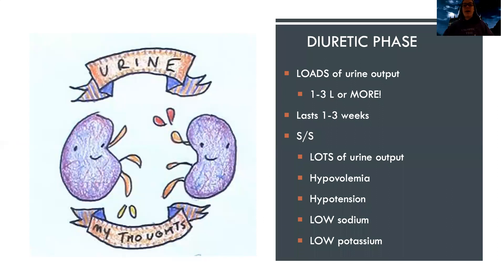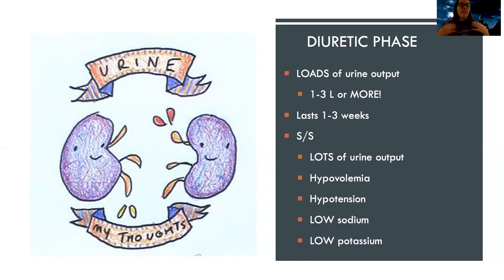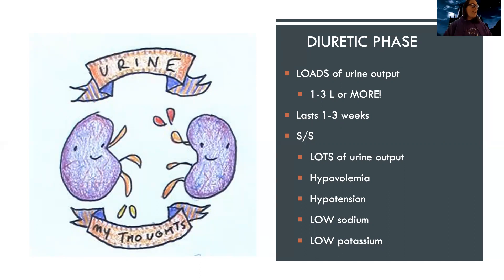On the opposite end of the spectrum, in the diuretic phase, the patient is doing a little better - they regain the ability to urinate. The problem is they can urinate but cannot concentrate their urine. The kidneys go a little crazy, letting go of everything in a free-for-all - lots and lots of diuresis. They can produce one to three liters or more of urine, and this phase usually lasts one to three weeks. With all that urine output comes loss of volume, so you can see low blood pressure and low preload. They can also have low sodium and low potassium because they're peeing everything out. Watch their electrolytes closely and keep them on a cardiac monitor.